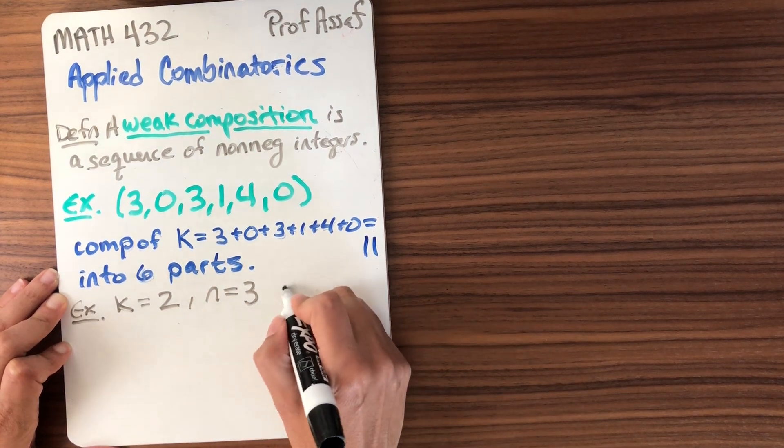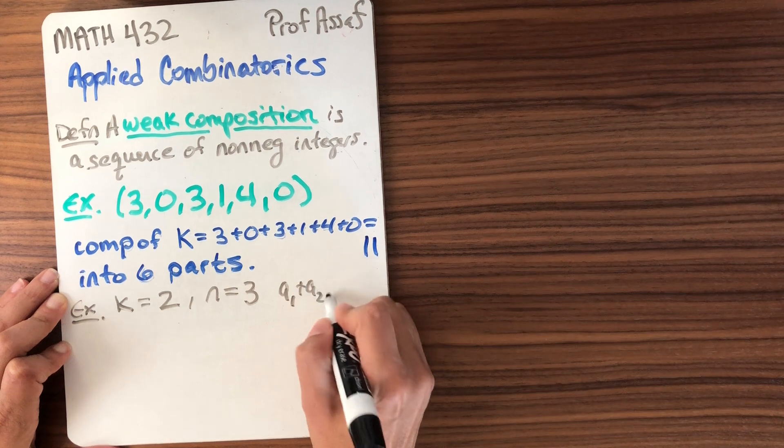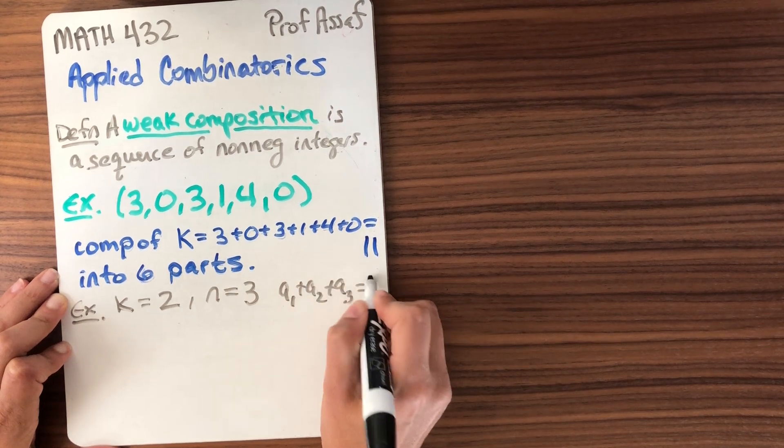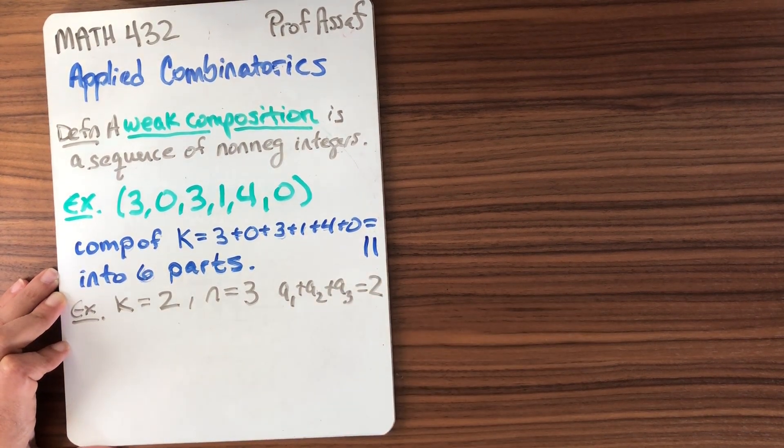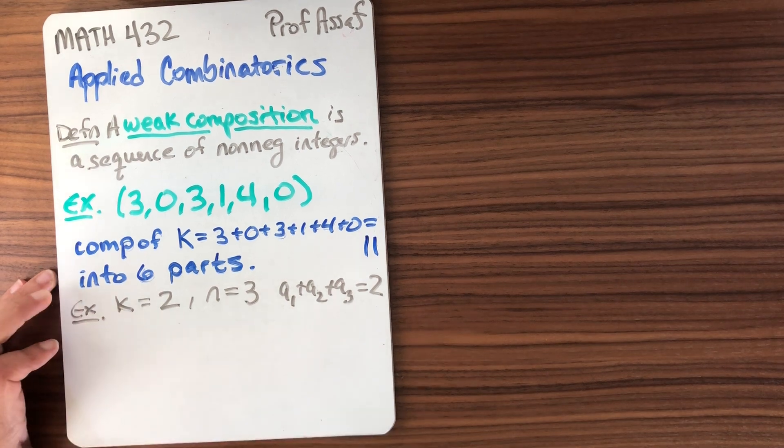This means my numbers have to add up to 2 and I have 3 of the numbers. So maybe that's worth writing down as a1 plus a2 plus a3 equals 2. These are the sequences that I'm going to try to write down.